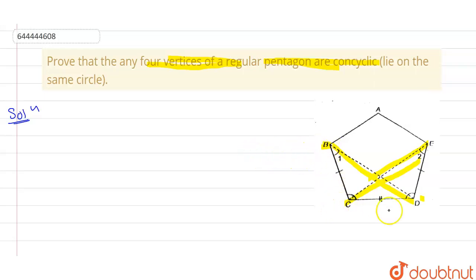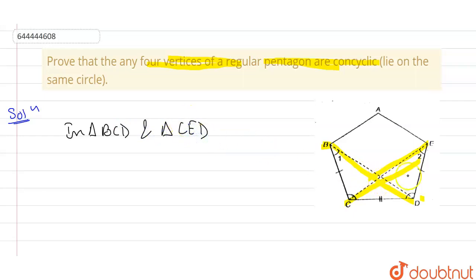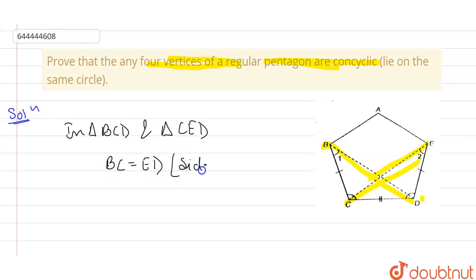Suppose I have two triangles: triangle BCD and triangle ECD. In triangle BCD and triangle ECD, we can clearly see that BC is equal to ED, because in a regular pentagon all sides are equal — sides of a regular pentagon. Also, CD is the common line segment, so CD equals CD.